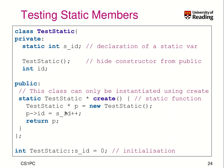Since the class header typically contains only the declaration, we also need memory space for the static variable. To do that in the implementation file, we have to define and initialize the variable, using the class name as a namespace scope. This is similar to using an extern variable — the definition here provides the actual storage space for this variable.